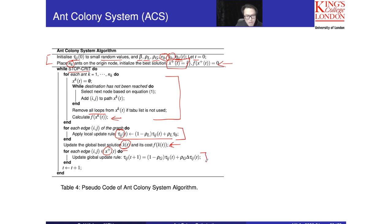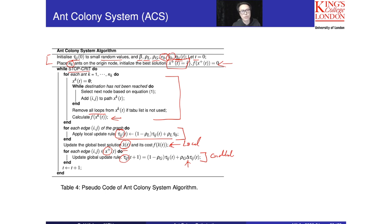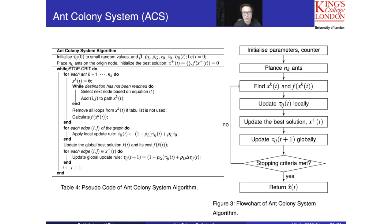This line — the local update rule — and this one — the global update rule — are key steps. Once we know x+, we calculate delta and update tau_ij for those edges used by the best solution x+. Then increase the counter and repeat the process until the stopping criterion has been met. The algorithm then returns the best solution. Instead of using pseudocode, you can also use a flowchart — they refer to the same thing.